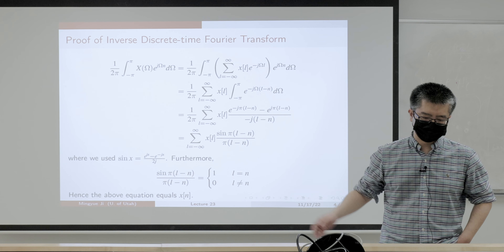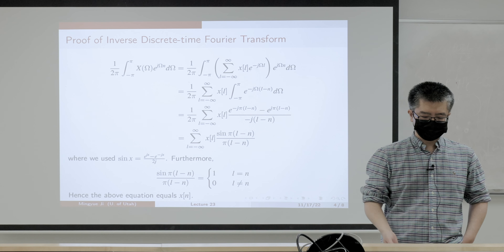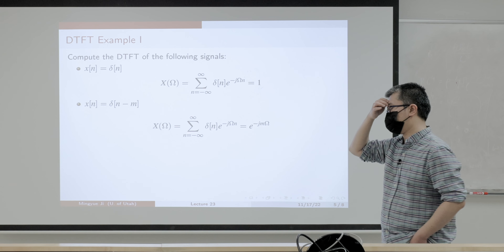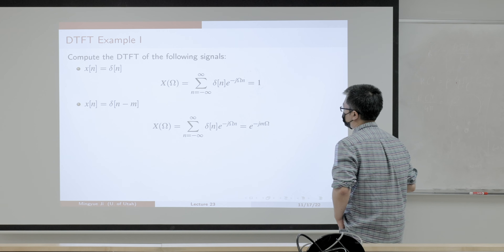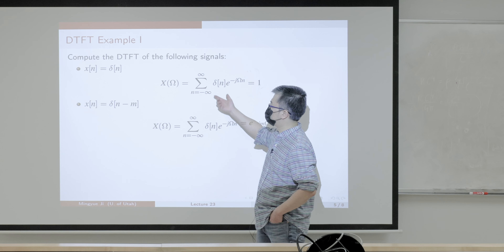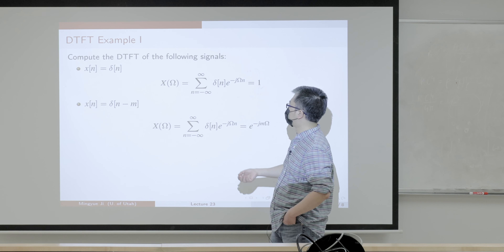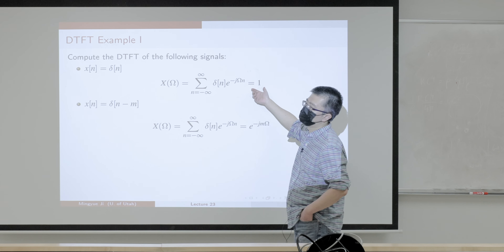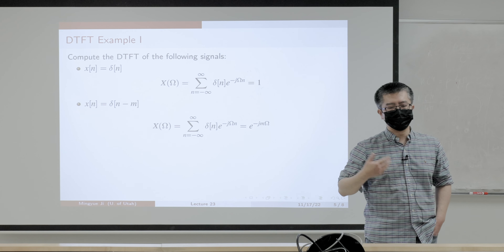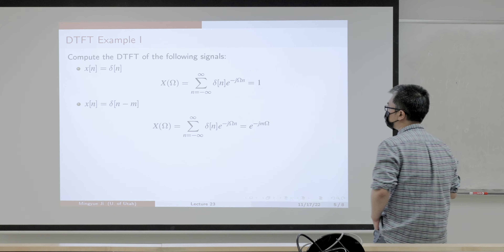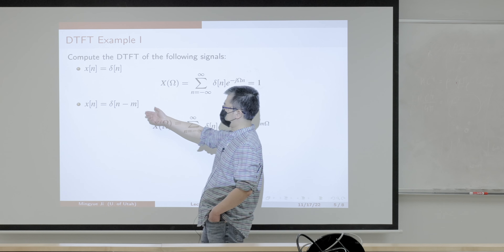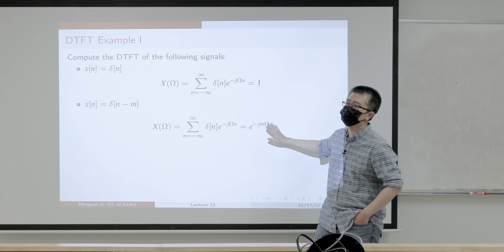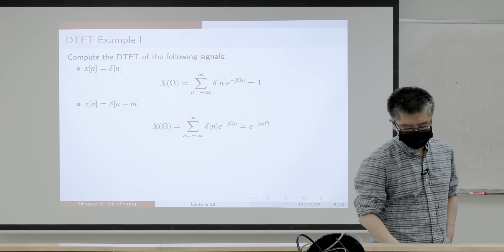There's a brief proof on the inverse DTFT in the notes if you're interested. We also covered important examples of DTFT. The first example was the delta signal — not surprisingly, the Fourier transform of the delta signal is just one, which holds for CTFT, DTFT, Laplace transform, and everything. If we do a time shift on a delta signal, in the frequency domain we get a phase shift — we've seen this many times and it should be very natural.